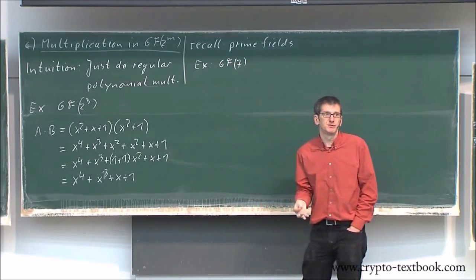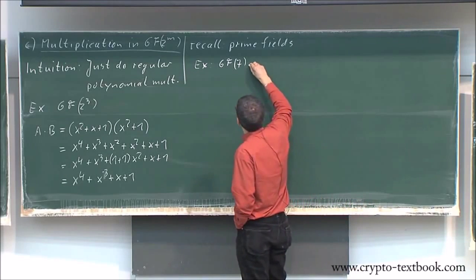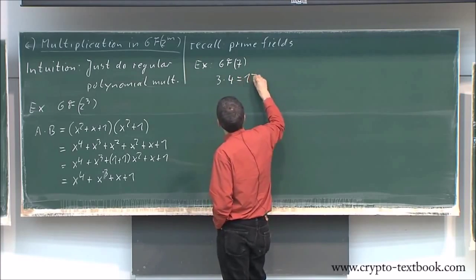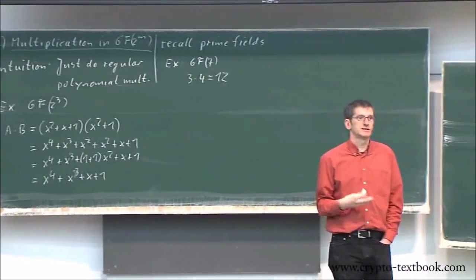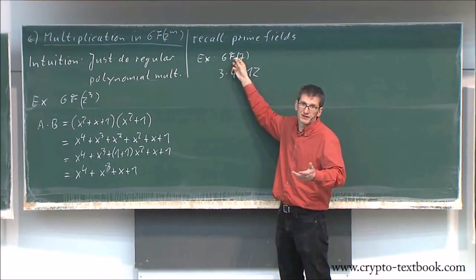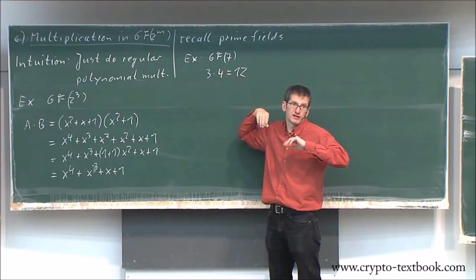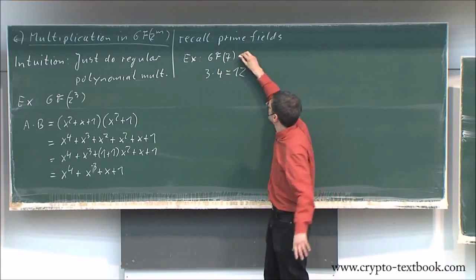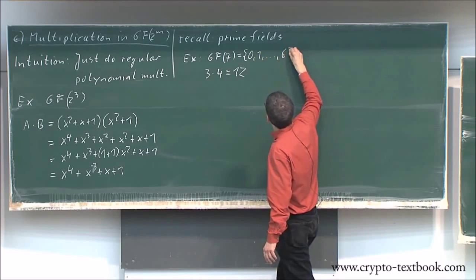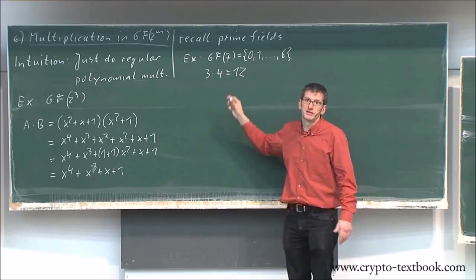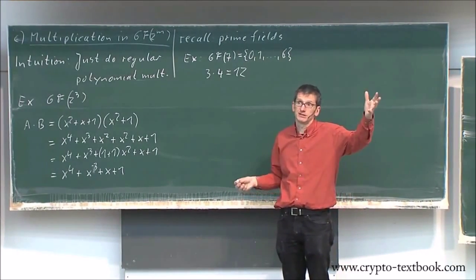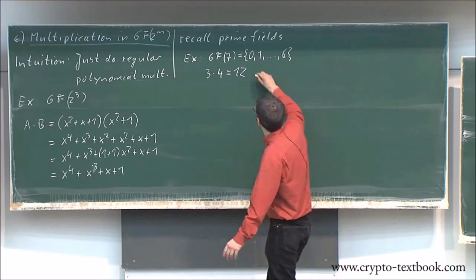Let's go back to prime fields. How did we deal with that in prime fields? Let's say we do GF(7). We were in a similar situation — when you multiply, say, three and four in GF(7), you get 12 out. 12 is not in the field; the elements are only zero through six. How did we deal with that? What was the magic thing we did?